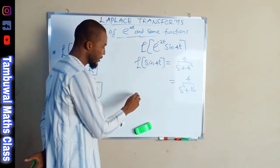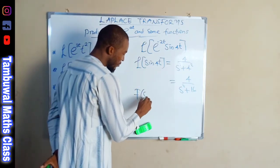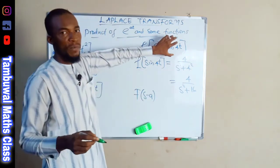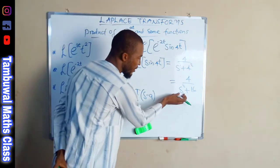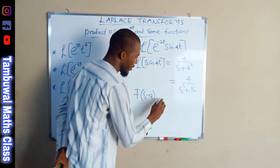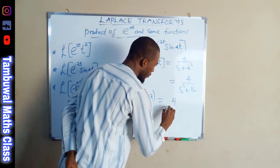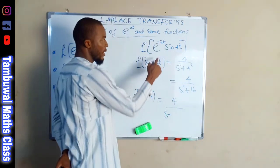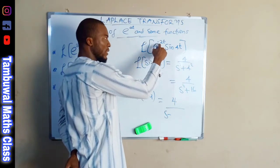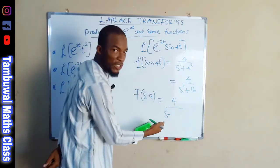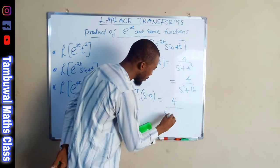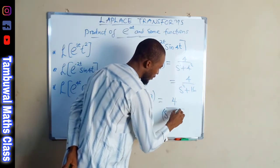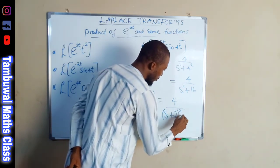To obtain F(s minus a), which is the Laplace transform of this product, we replace s with s minus a, where a is negative two. A negative times a negative changes the sign to positive, so we get four divided by (s plus two) squared plus sixteen. This is the Laplace transform of e^(negative 2t) sine four t.